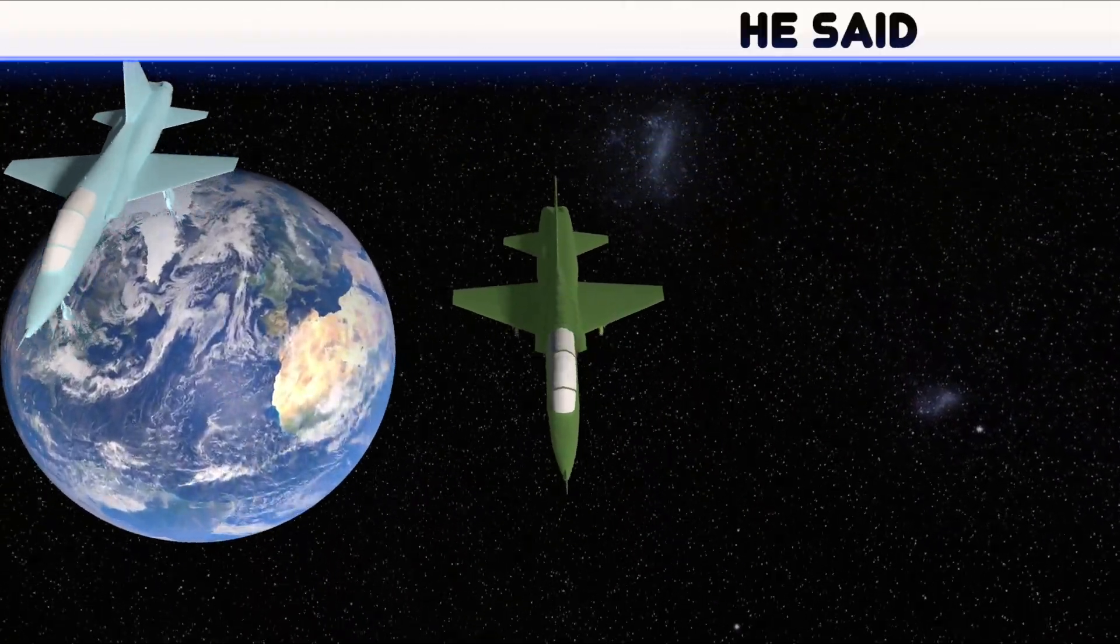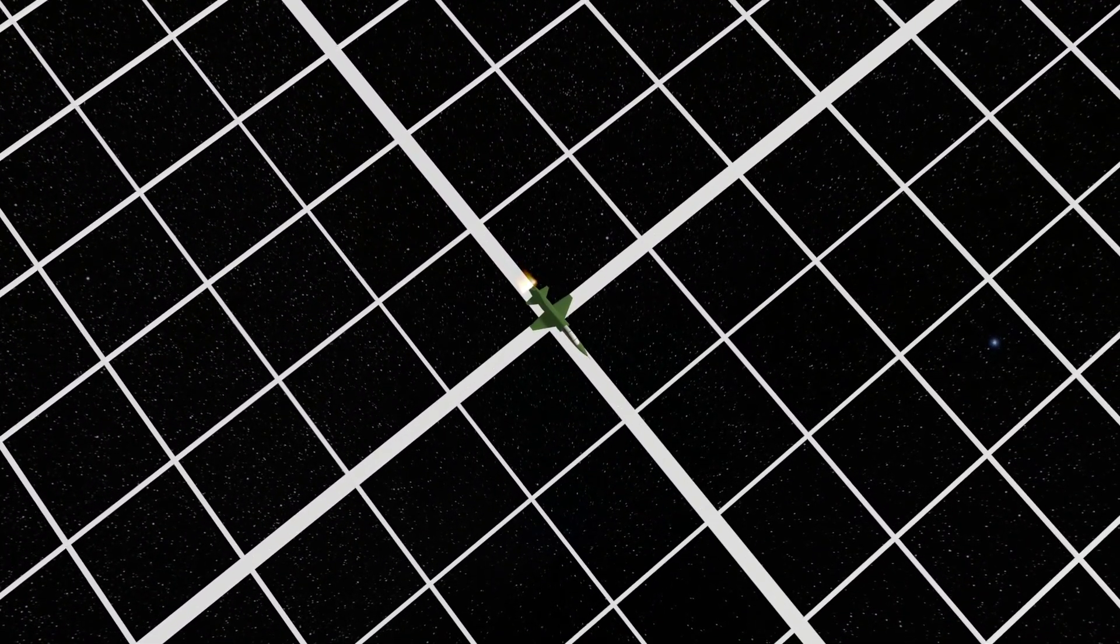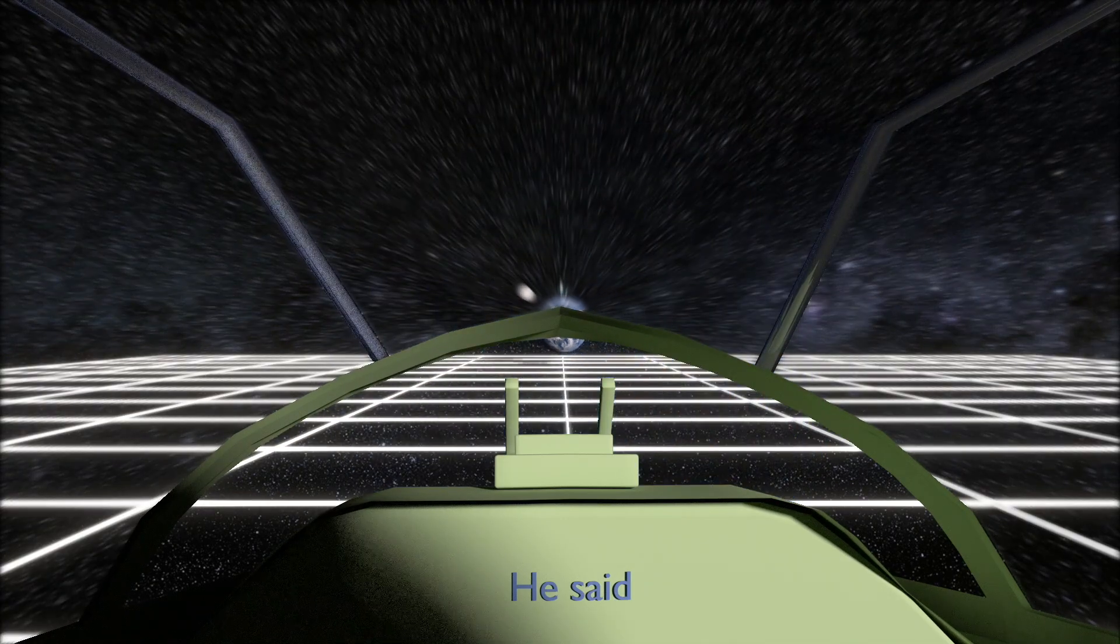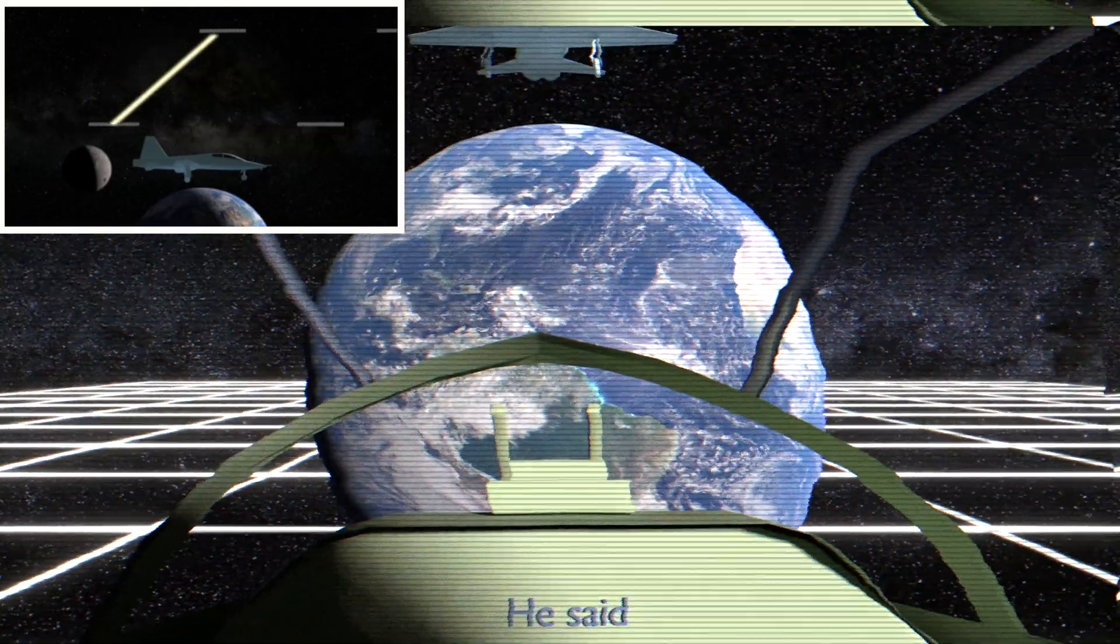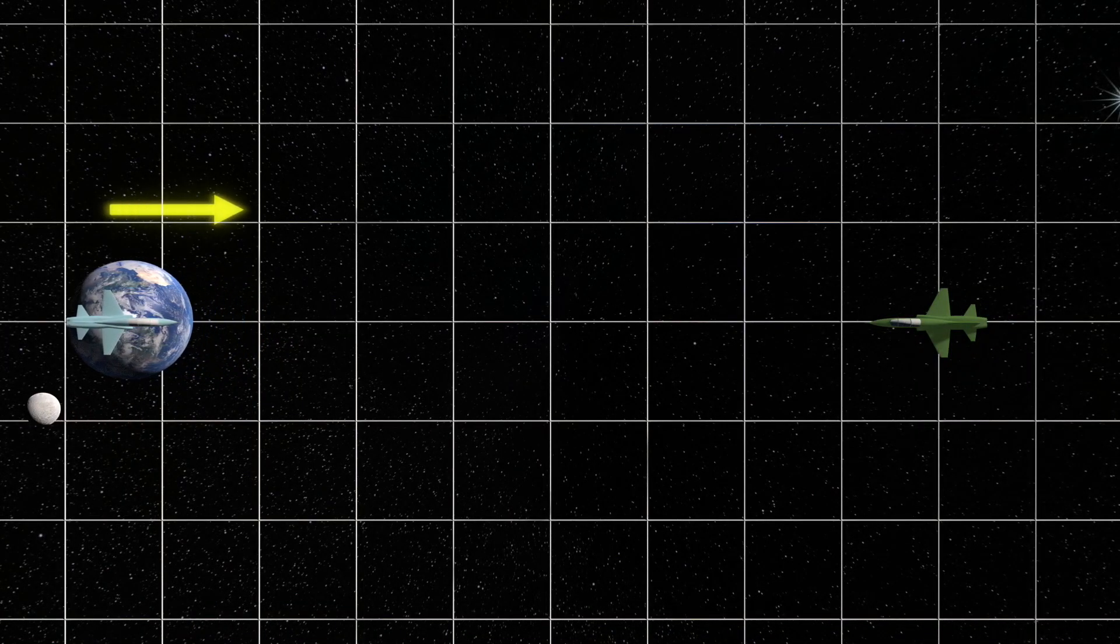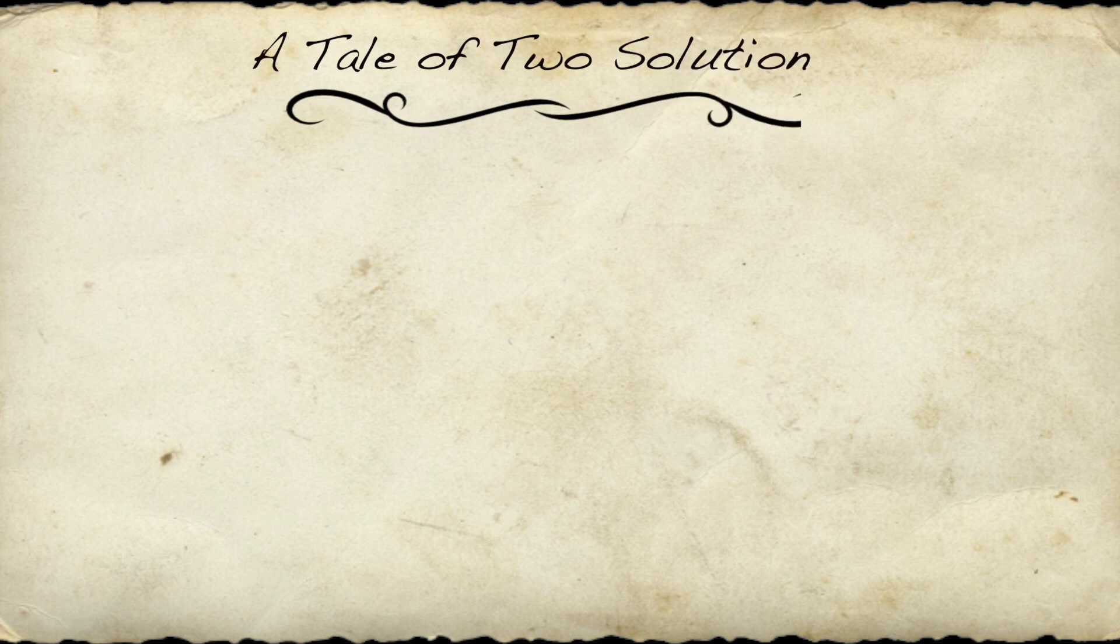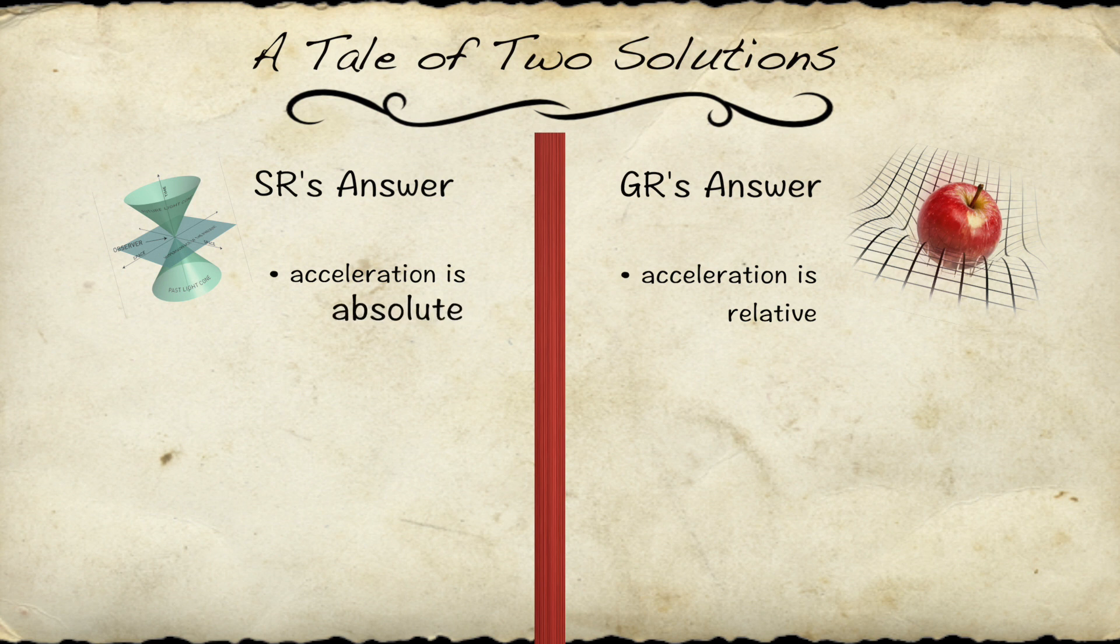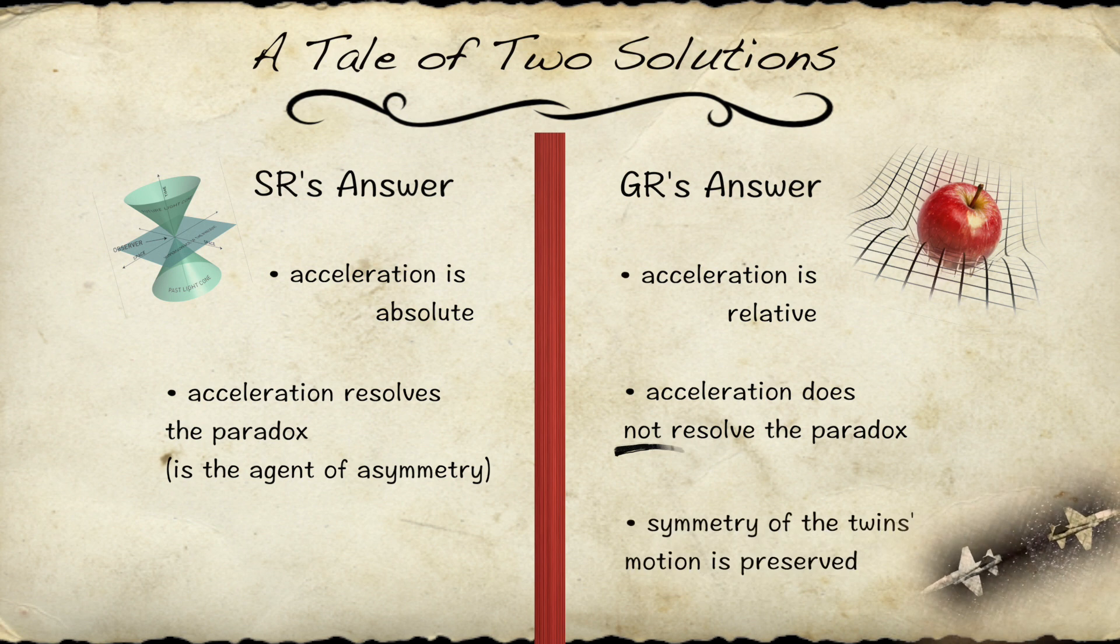But now let's consider the Space Twin's perspective. According to Einstein, the Space Twin can claim that he is actually at rest during his entire journey. Indeed, from his point of view, it is the Earth and the rest of the universe that are traveling away at constant velocity, turning around, and traveling back again, and whose clocks are therefore running slow. He can even say that it is his twin along with the rest of the universe that is accelerating at the turnaround point, not him. This is keenly distinct from the viewpoint of the solution in special relativity, where the acceleration of the Space Twin is treated as absolute. But in Einstein's view, we can still preserve this symmetry.